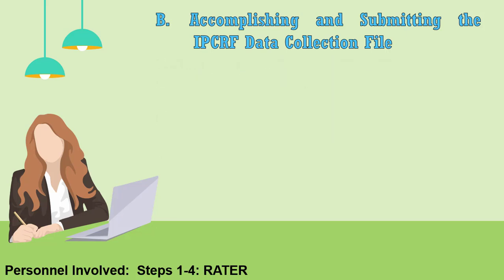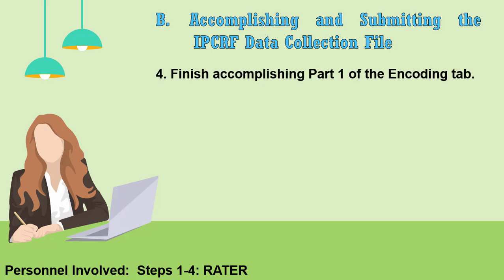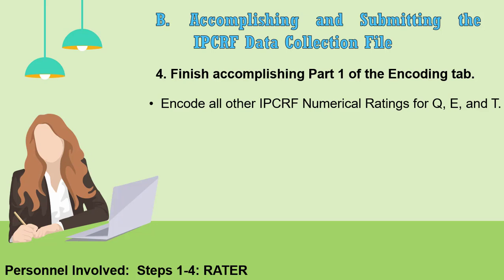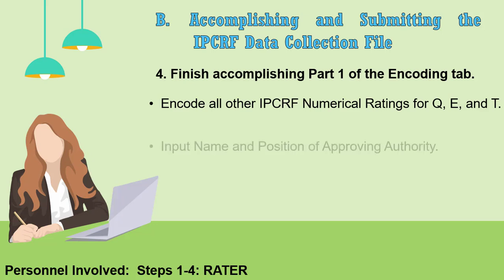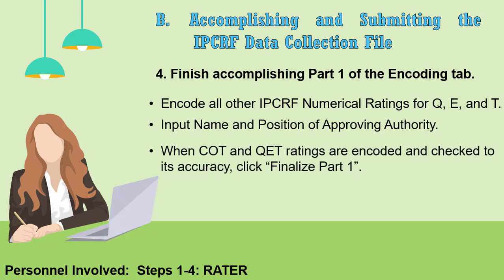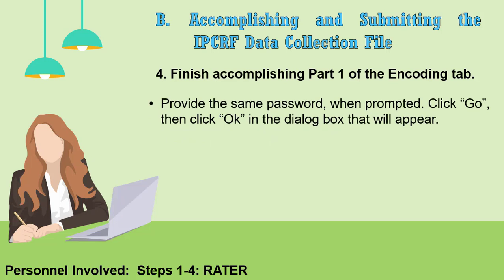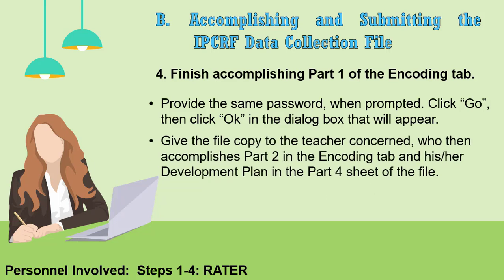Step 4: Finish accomplishing Part 1 of the Encoding tab. Encode all other IPCRF numerical ratings for Q, E, and T. Input the name and position of the approving authority. When COT and QET ratings are encoded and checked for accuracy, click Finalize Part 1. Provide the same password when prompted. Click Go, then click OK in the dialog box that will appear. Give the file copy to the teacher concerned, who then accomplishes Part 2 in the Encoding tab and his or her development plan in the Part 4 sheet of the file.